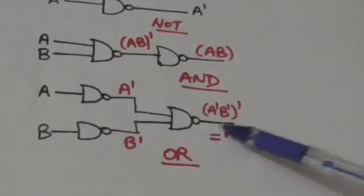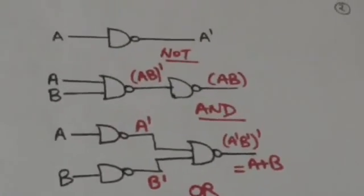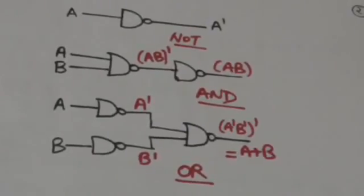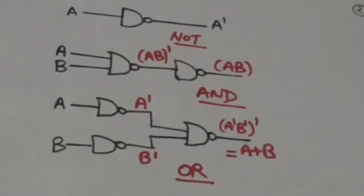So this logic circuit performs the OR operation, and we can implement OR operation by NAND gates. Since any boolean function can be implemented by AND, OR, and NOT logic gates, and all those operations can be implemented with NAND gates, any boolean function can be implemented by NAND gates. Therefore, NAND gate is a universal gate. Thank you very much.